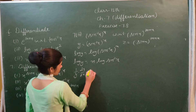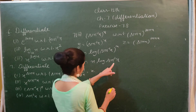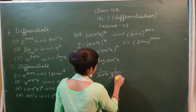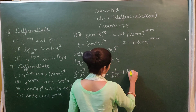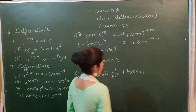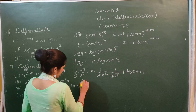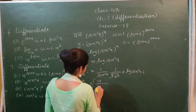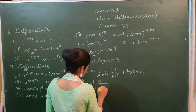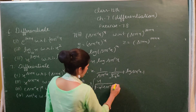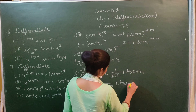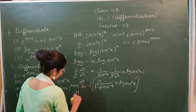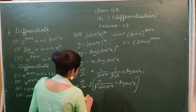Differentiating with respect to x using the product rule: (1/y)(dy/dx) = x times (1/sin⁻¹x) times (1/√(1 - x²)) plus log(sin⁻¹x) times 1. Therefore dy/dx = y times (x / (sin⁻¹x √(1 - x²)) + log(sin⁻¹x)).